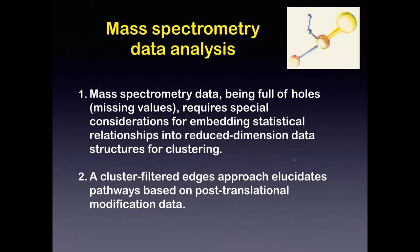The basic idea is we've got holey data. Mass spectrometry detectors pull peaks stochastically, fragment them, and leave holes in the data because the peaks they pull are sort of random each time. We figured out a way to surmount the holey data problem, and we thought a lot about how to cluster holey data because we want to use a cluster-filtered edges approach to look at pathways based on post-translational modification data.